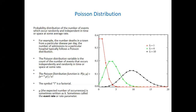It approximates binomial distribution, but if it is rare, it will be Poisson. Something that would have followed binomial distribution, if it is rare, will follow Poisson.